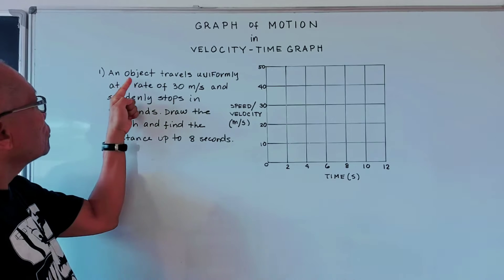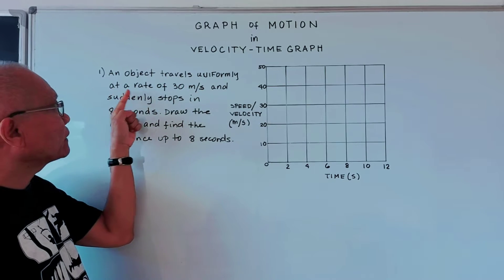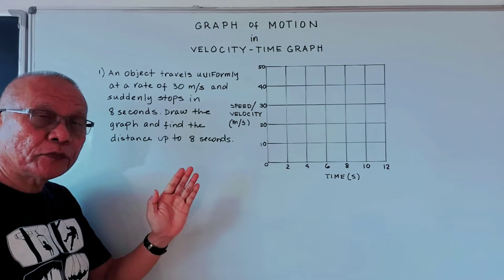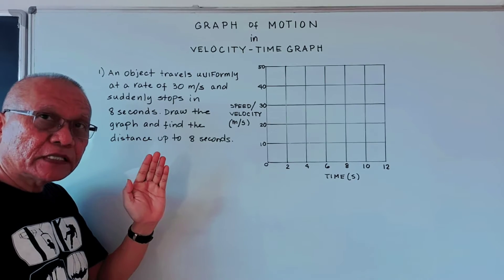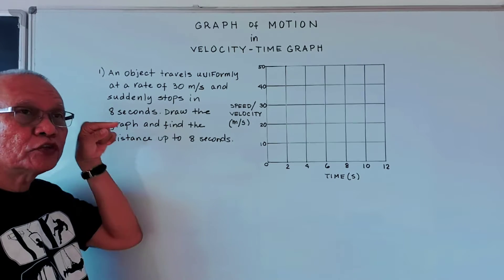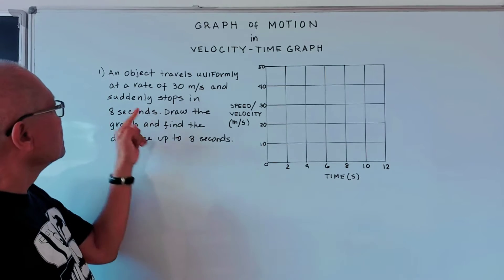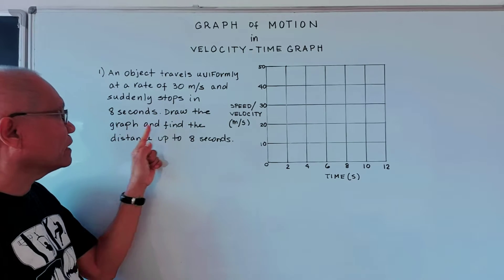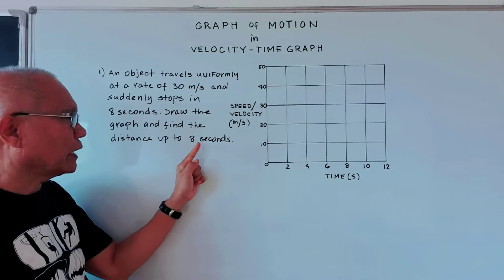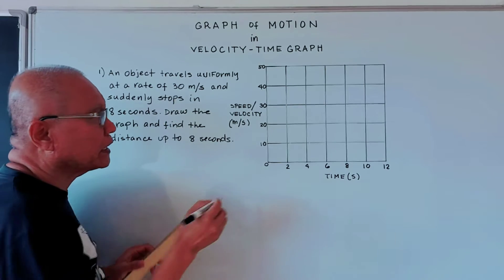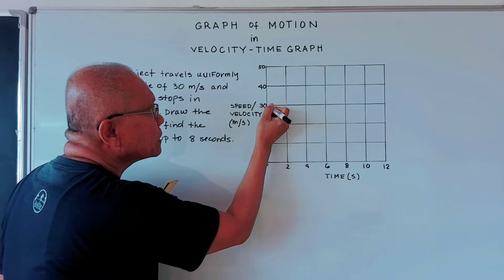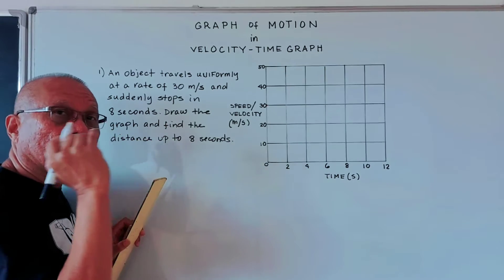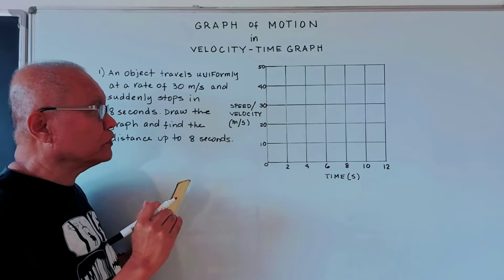Number one: an object travels uniformly at a rate of 30 meters per second. When we say speed is uniform, velocity is constant, it means the graph of our motion is horizontal. And then it suddenly stops in 8 seconds. So from the 30 meters per second point, we are going to draw a horizontal line because horizontal means uniform speed or uniform velocity.